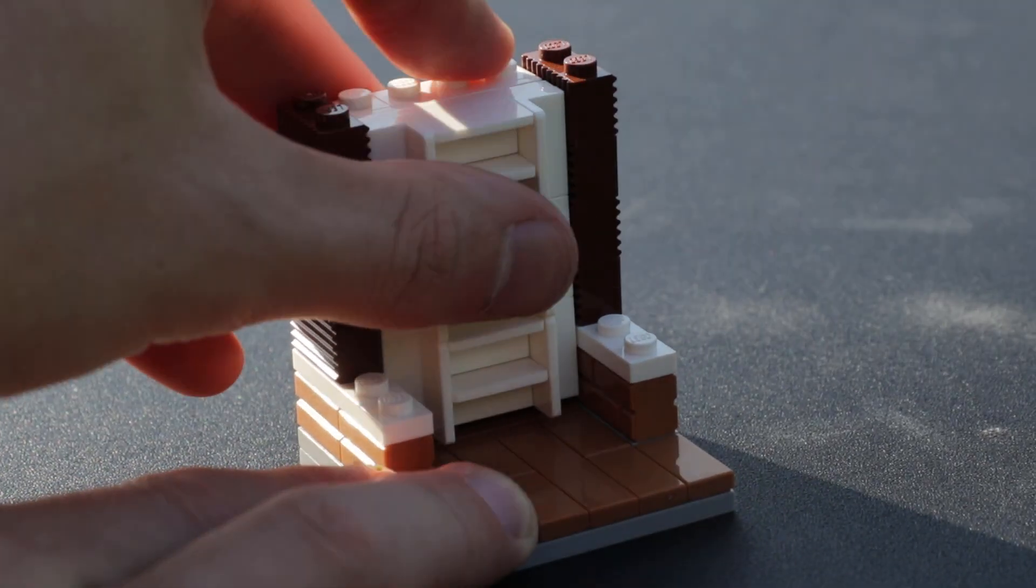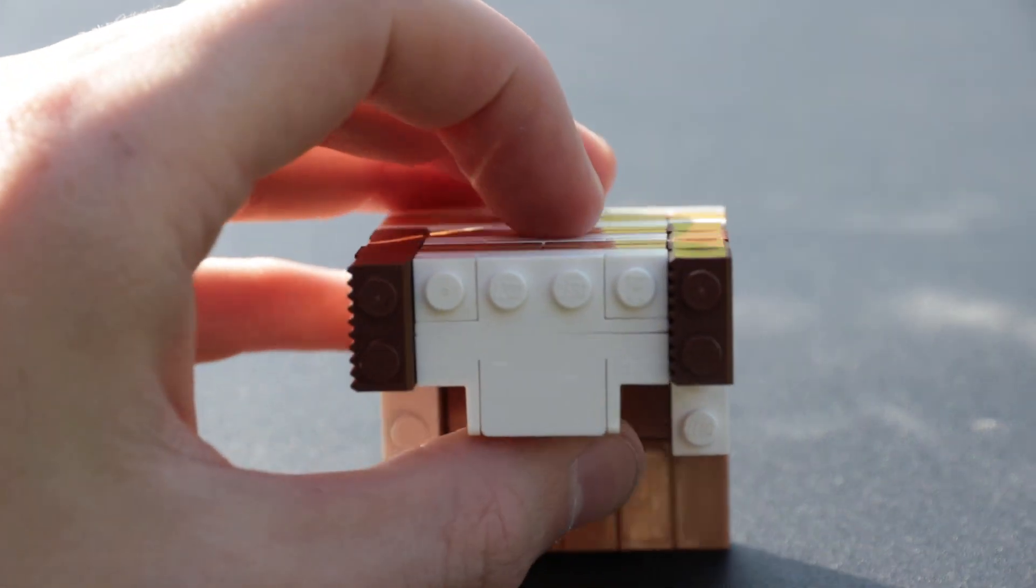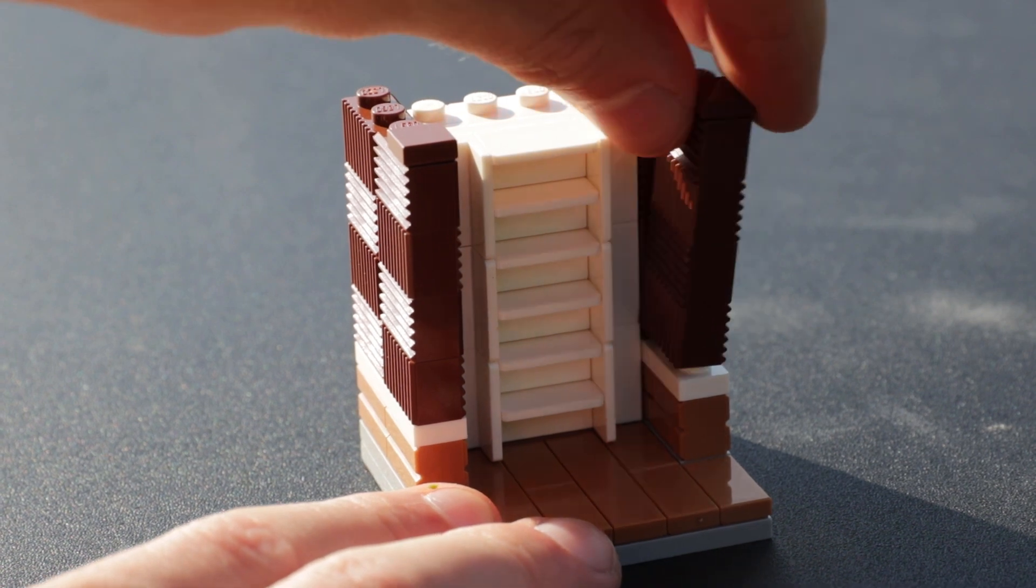This is going to make it so that the only part that's actually extruding from the wall and looks like it's not a part of the wall is the shelf itself. The rest of the panel pieces are actually going to be flush with the wall and they're going to look like they blend seamlessly.